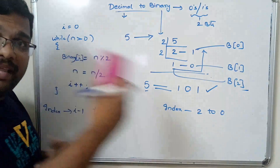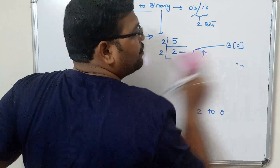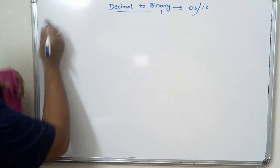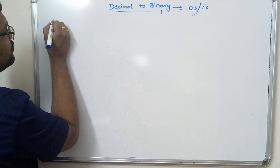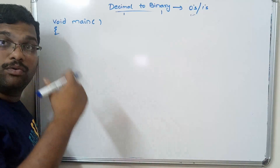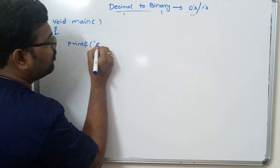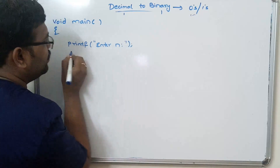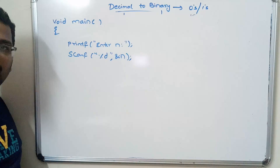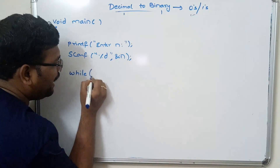Let us write the program so we can trace it and clearly understand it. We use the mod operator and the division operator. Starting from the main function — we have to read the n value using scanf.